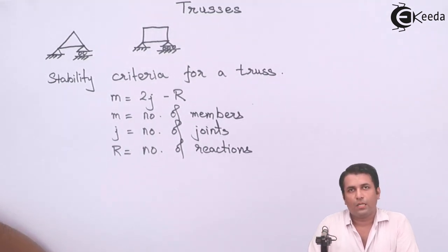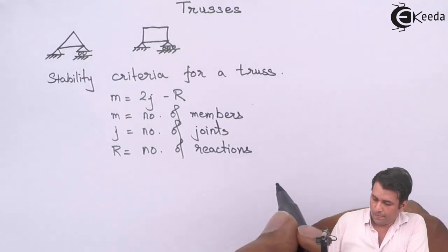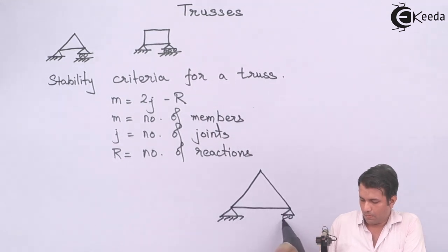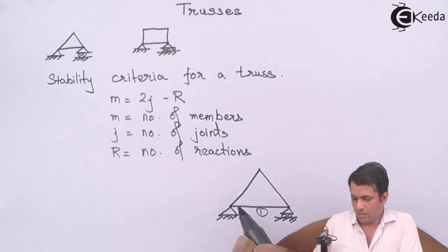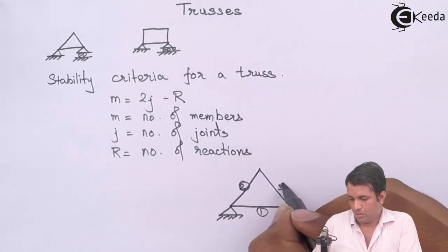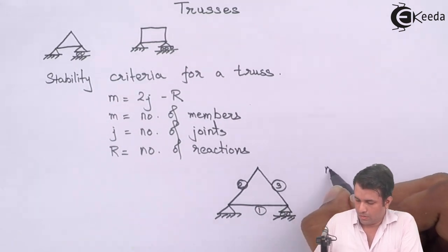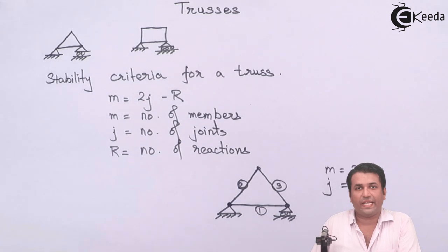For example, if I take any simple truss, it should satisfy this condition of M equal to 2J minus R. I will give you one example of a truss, the triangular truss that we had seen initially. This truss is having three members: 1, 2, and 3. J, number of joints, we have three joints.